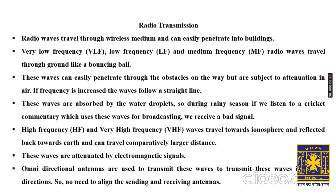At Akashvani stations, there is an antenna at the center of the city capable of transmitting signals in all directions — that is called an omnidirectional antenna. The receiving antennas were also omnidirectional, unlike older TV antennas. So omnidirectional antennas transmit and receive radio waves in all directions, and there is no need to align the sending and receiving antennas in radio transmission.